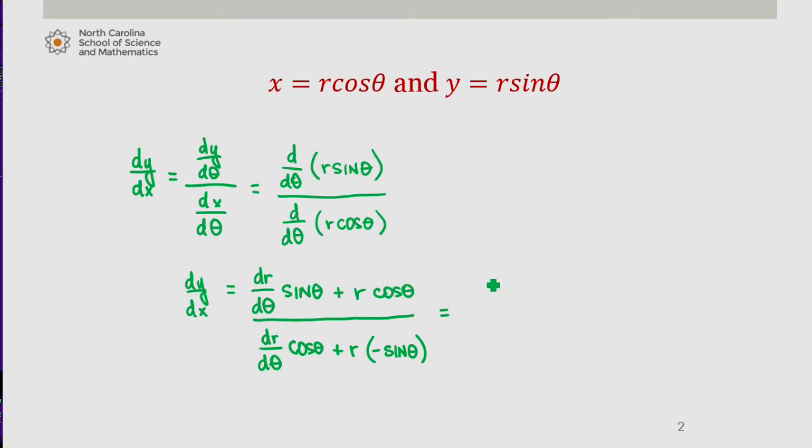So cleaning this up, we have dr d theta times sine theta plus r cosine theta divided by dr d theta cosine theta minus r times sine theta.